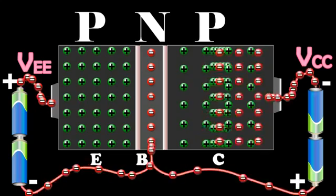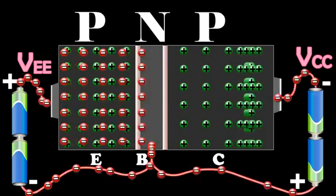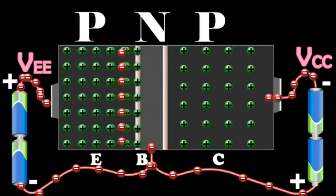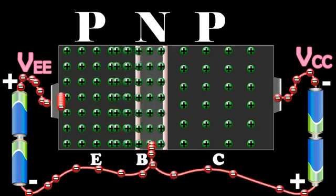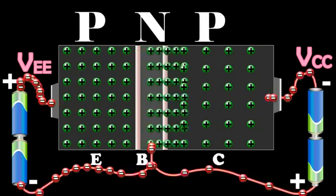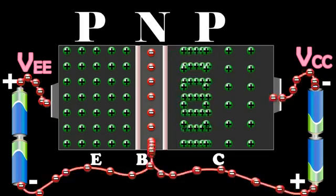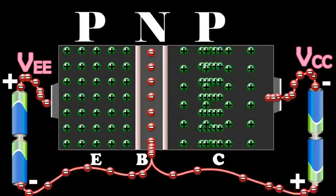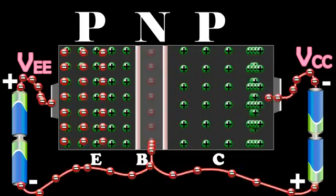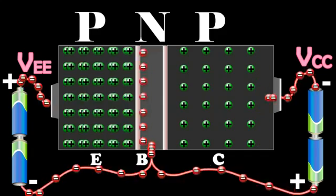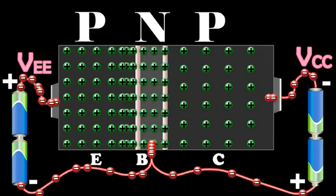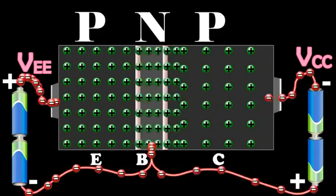At the same time, an equal number of electrons flow from the negative terminal of VEE and reach the positive terminal of VCC. The flow of holes per second from the base to the collector gives rise to the collector current IC from the base to the collector.